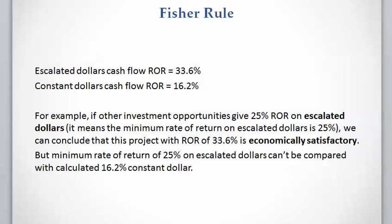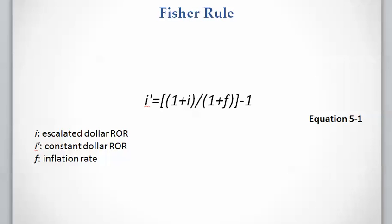For example, if we have other investment opportunities that give 25% rate of return on the escalated dollar cash flow, then we can conclude that this is a good investment because the escalated dollar rate of return is 33.6%, and this project is economically satisfactory. But the minimum rate of return of 25% on the escalated dollar cannot be applied to the constant dollar rate of return. This is a very important point that you should always be careful about — escalated dollar rates cannot be compared with constant dollar rates.